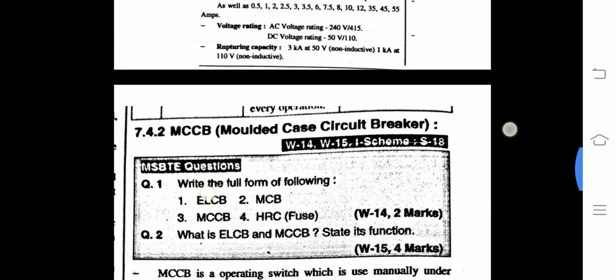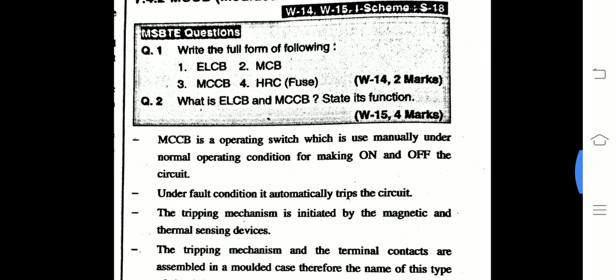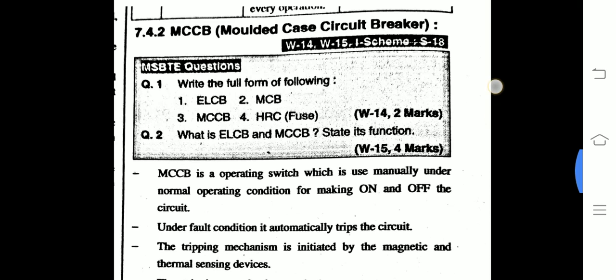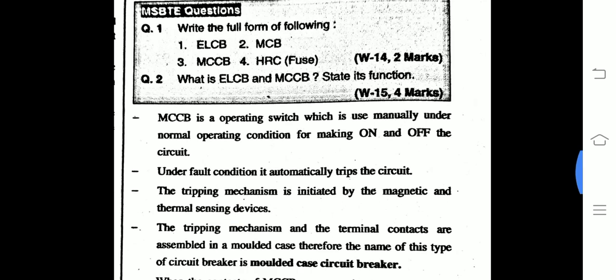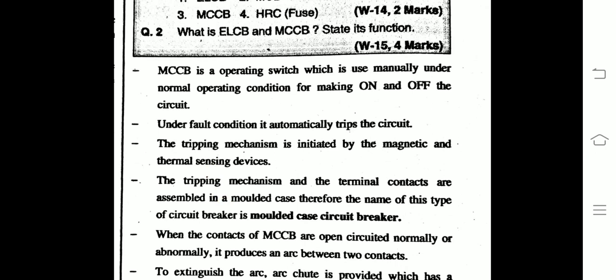Next is the MCCB, that is the Molded Case Circuit Breaker. MCCB is an operating switch which is used manually under normal operating conditions for making the circuit on and off. Under fault conditions, it automatically trips the circuit. The tripping mechanism is initiated by magnetic and thermal sensing devices.